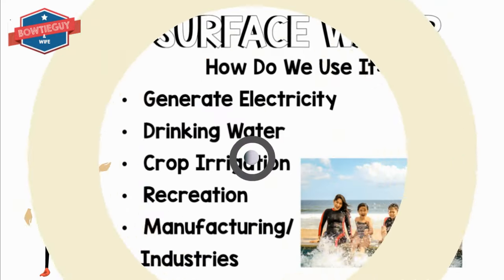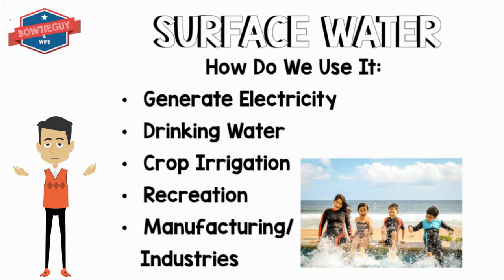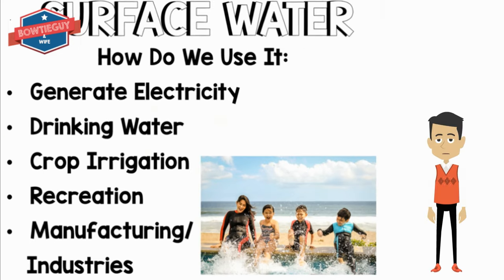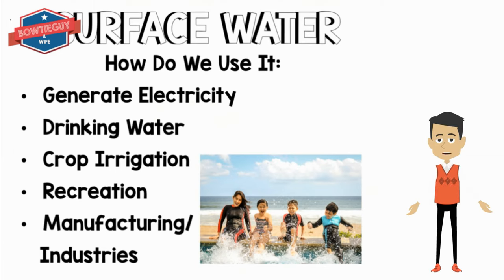How do we use surface water? We use surface water to generate electricity, for drinking water, for crop irrigation, for recreation, and for manufacturing and industries.